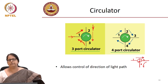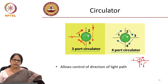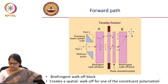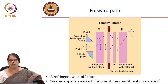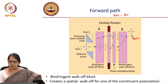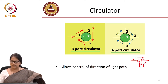We have seen when we did the Brillouin scattering that this is one device which we can use to track the power that is scattered in the reverse direction. Now, the design in the forward path, which is essentially port 1 to port 2 — how does this transmission from port 1 to port 2 happen?